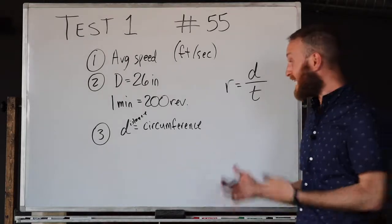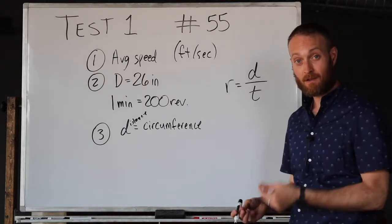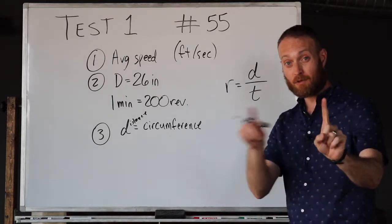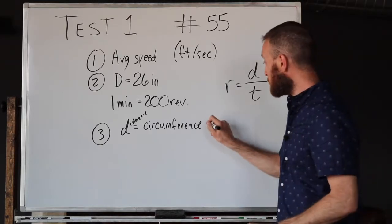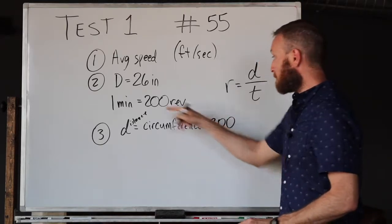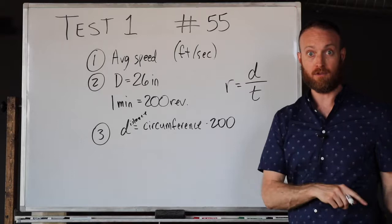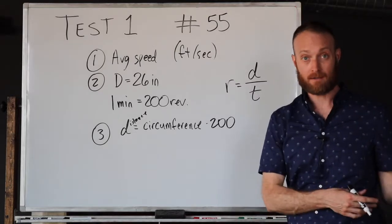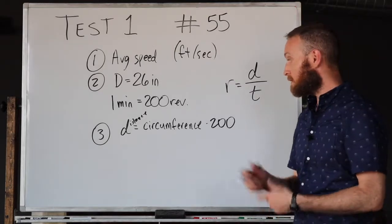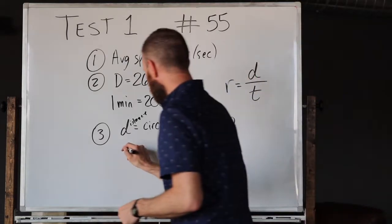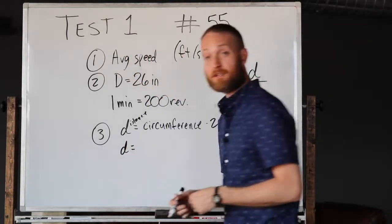We're going to find the circumference of the circle, but then we have to take that circumference because that's the circumference of one revolution, and then we're going to have to multiply that by 200 revolutions because that's how far it actually went in that one minute.